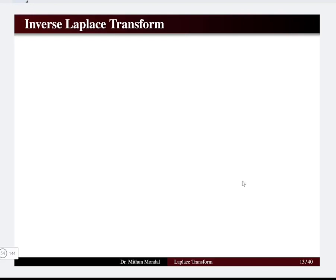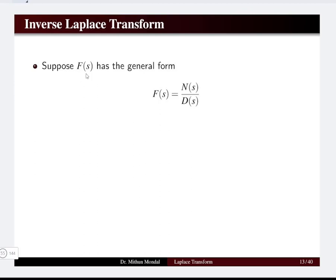Welcome to the next lecture in electric circuit analysis. We were discussing the Laplace transform. In the previous lecture we introduced the Laplace transform. Now in this particular lecture we will see how the Laplace transform is inversed to get the signal in the time domain. Suppose F(s) has the general form — F(s) is the Laplace transform of f(t). Given an input signal f(t), we have the Laplace transform as F(s). Now if we need to convert the Laplace transform signal to the time domain, we have to go for the inverse Laplace transform.